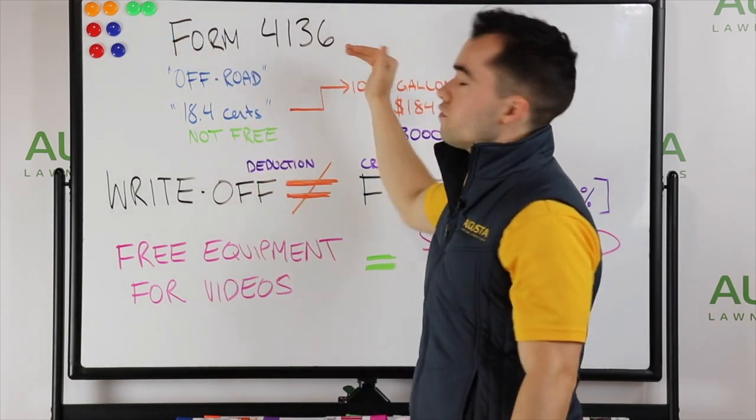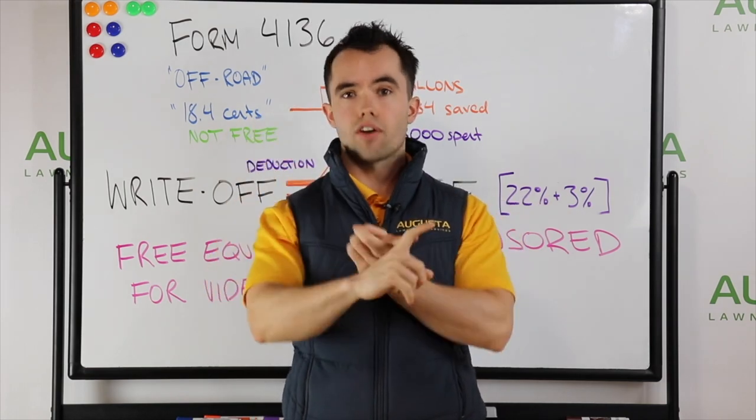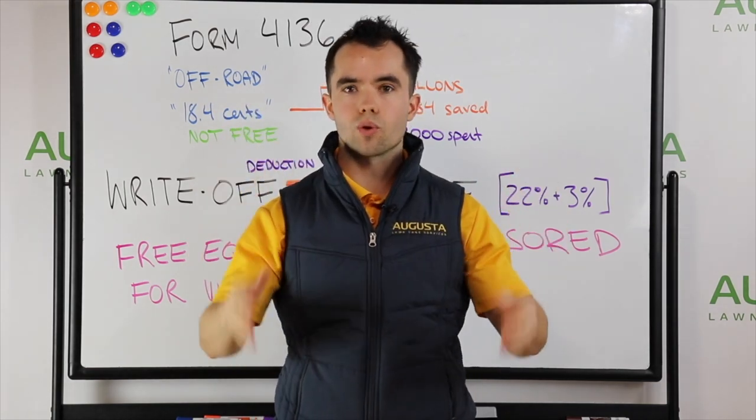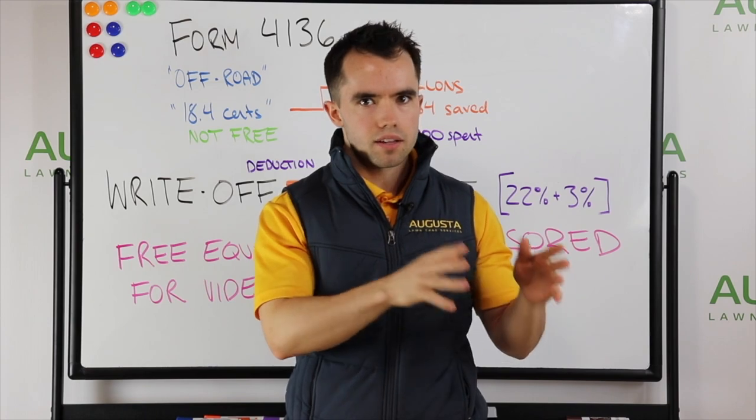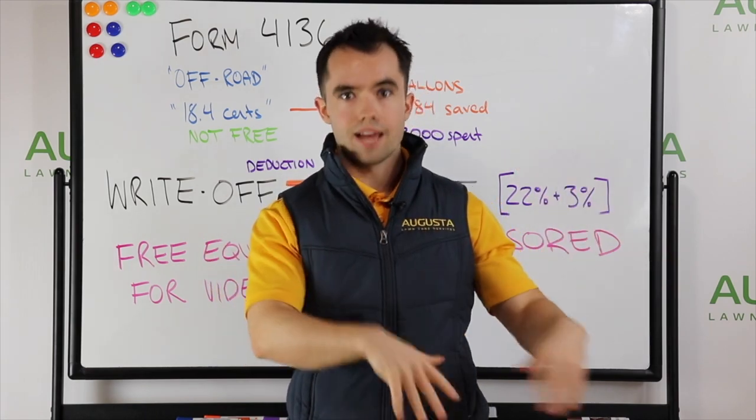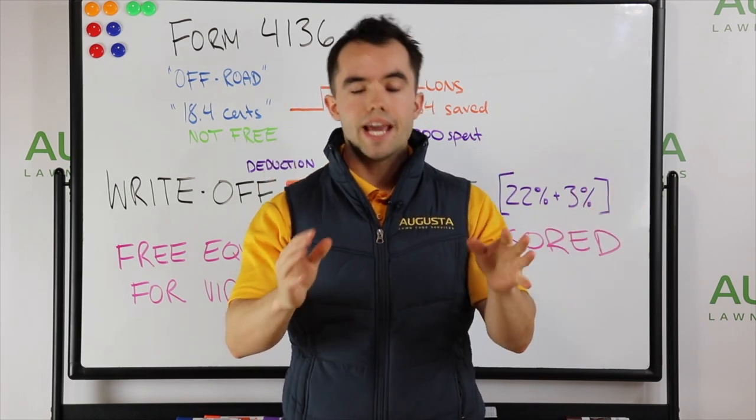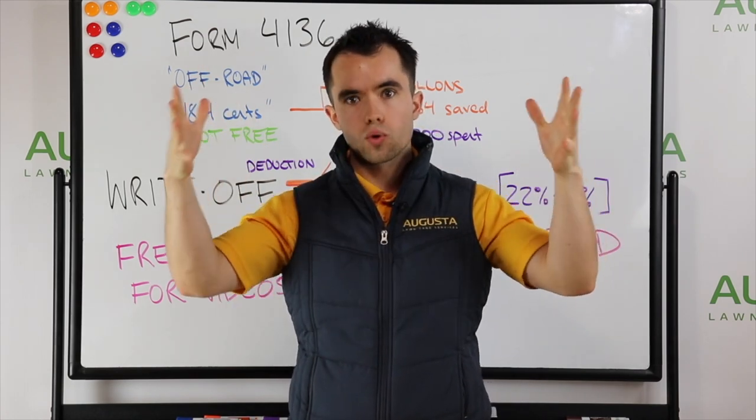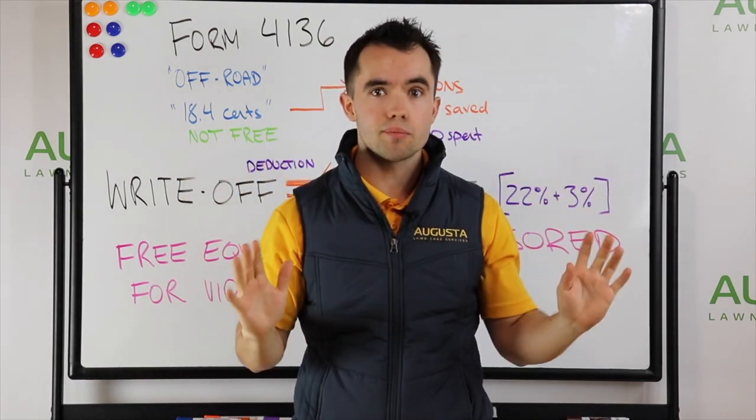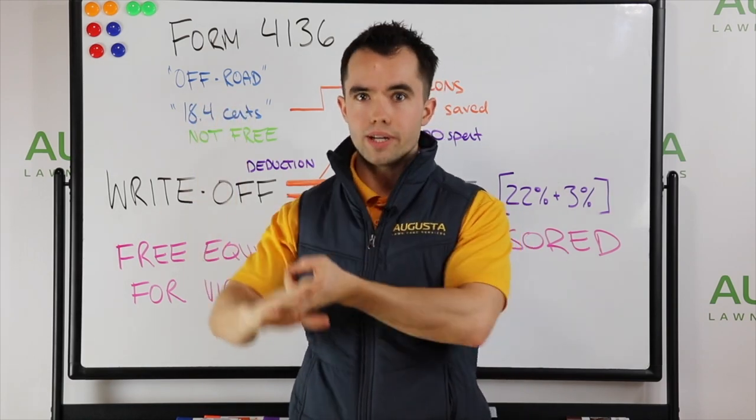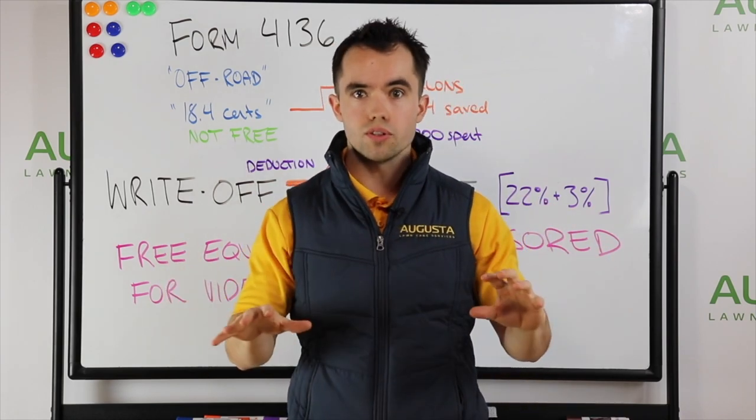First things first, Form 4136. This is a tax credit for off-road vehicles for industries like farming. Landscaping is another industry that we can use this for. I want to make this very clear: the vehicle needs to be off-road, which means you cannot get this tax credit for your trucks and equipment that goes on the road. You can only get it for mowers, weed whackers, chainsaws, the smaller equipment.